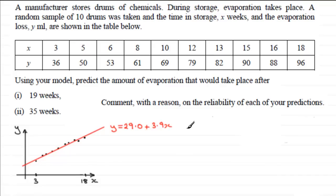Now when we need to make predictions about what the amount of evaporation would be after say 19 weeks what we've got to do is substitute x equals 19 into our formula here. So if we do that, when x equals 19 then by substituting it into here we end up with y equaling 103.1.